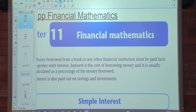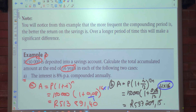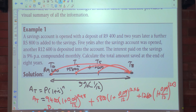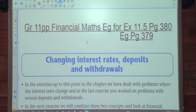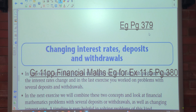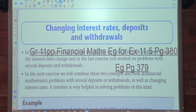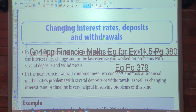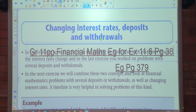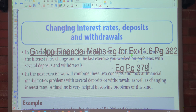Good morning class. Today we're looking at the examples for Exercise 11.7 — changing interest rates, deposits and withdrawals. Exercise 11.6 is on page 380, and the examples for this exercise are on page 381.